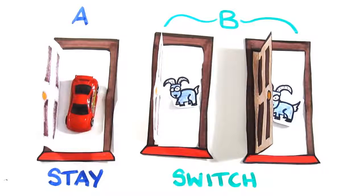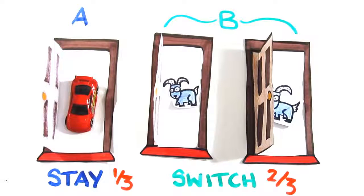Scenario A will always happen when you choose the winning door, and B will always happen when you pick a losing door, therefore A will happen 1 third of the time, and B will happen 2 thirds of the time. As such, switching your door wins 2 out of 3 times.